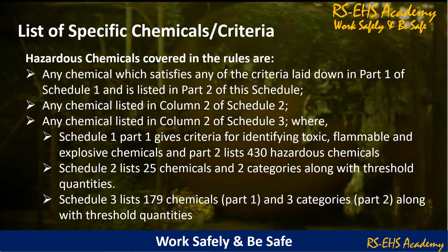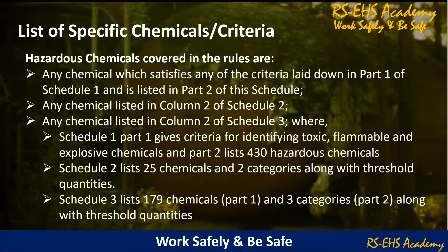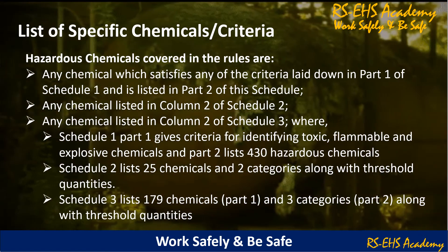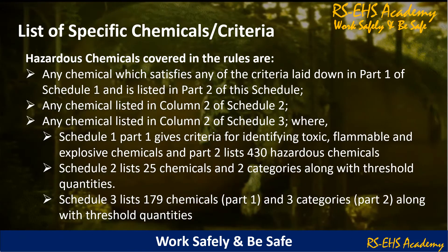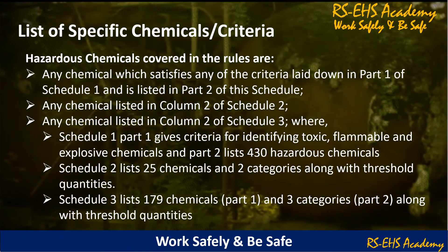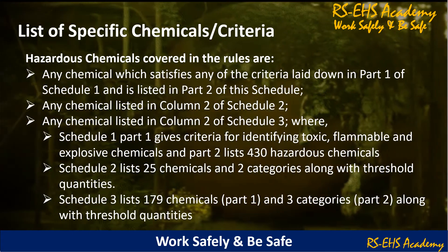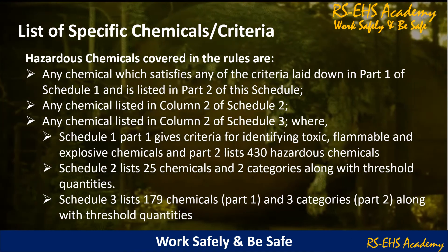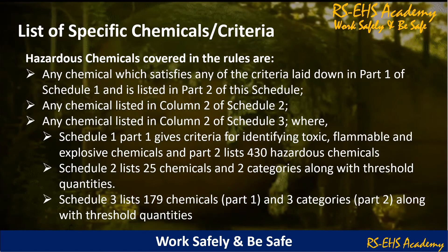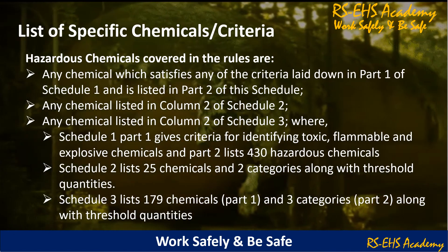Schedule 3 lists about 179 chemicals in Part 1 and 3 categories in Part 2, along with threshold quantities.